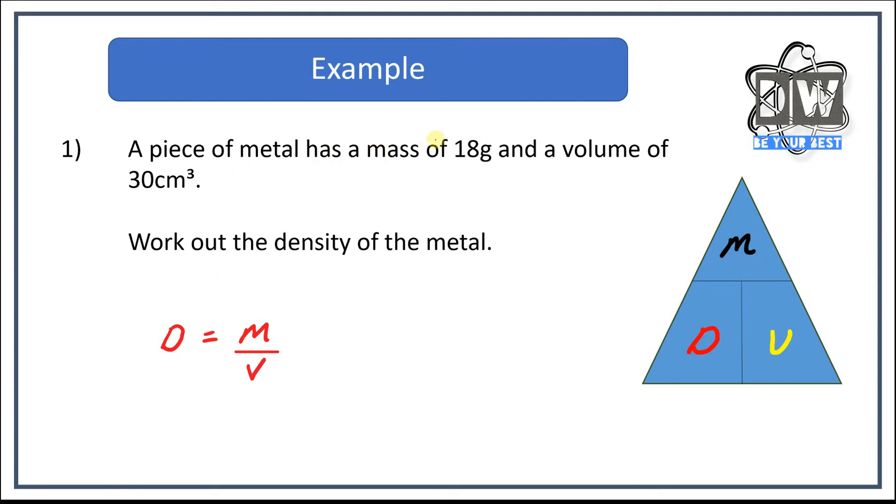And a volume of 30 centimeters cubed, so we have 30 centimeters cubed as the volume. So we'd rewrite it out: density equals 18 divided by 30. If we bang that into our calculator, we'll end up with density equaling 0.6. Now this is the only other part that is a little bit interesting: what do we put here? Well, density in this occasion is made up of grams and centimeters cubed. So what we write is we write down grams per centimeters cubed, or dash centimeters cubed.